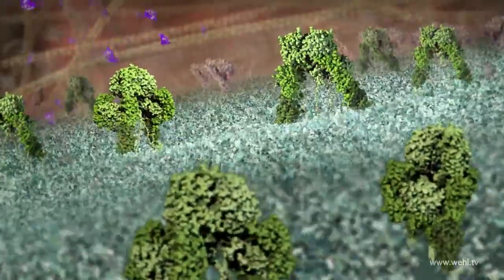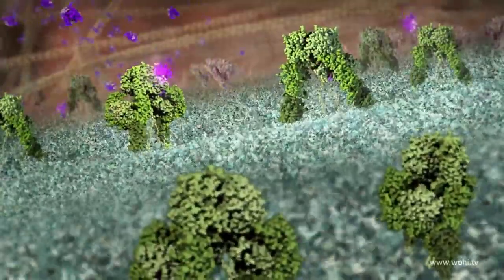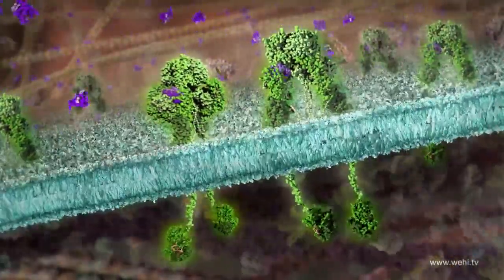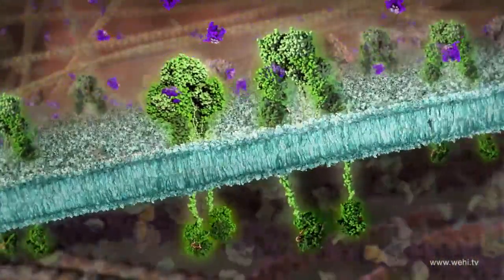When insulin binds to the outside parts of the receptor, it brings the two halves of the receptor together, and at the same time the two parts inside of the cell unwind and make contact.